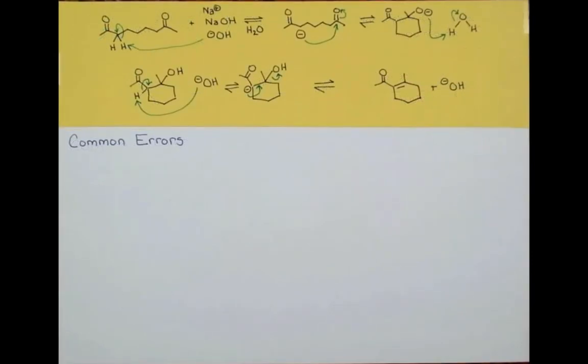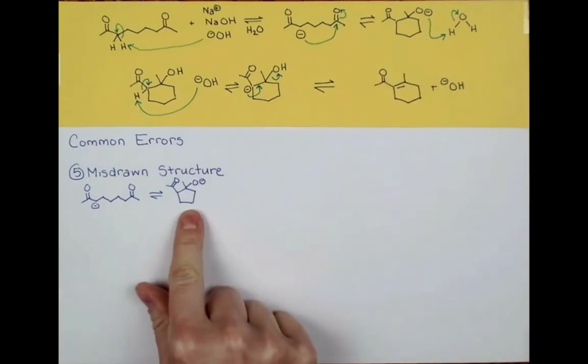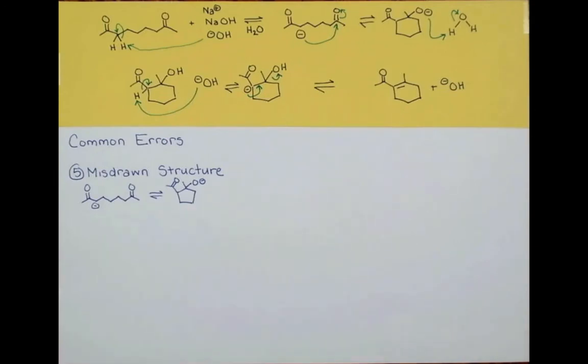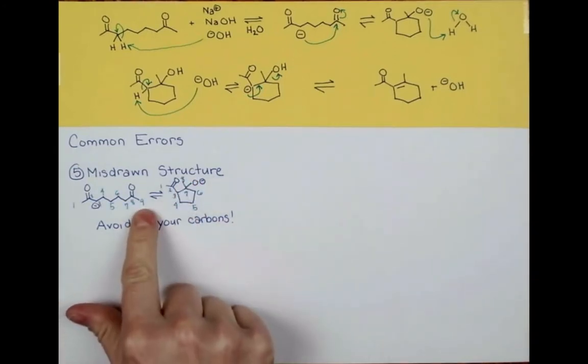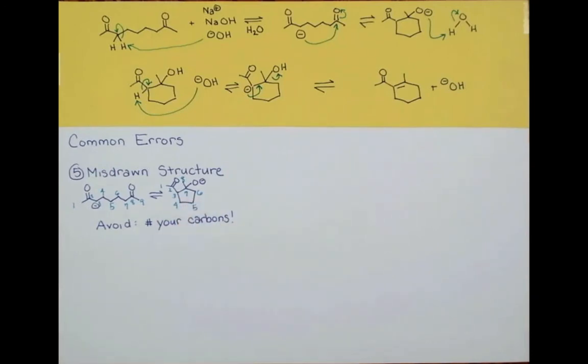Let's jump back to our anionic negatively charged mechanism, this intramolecular aldol, to go through the last four common errors I have for you. So often with long chains like this, my students lose points for misdrawing their structure. Here's an example: instead of making the six-membered ring they've miscounted and done a five-membered ring here. An easy way to avoid this is to number your carbons. If we number our chain then number our ring, we can easily see that we don't have the same number of carbon atoms and we can see that carbon three should have formed a bond with carbon eight, and here we have three forming a bond with carbon seven. An easy error to avoid and I number my carbons all the time.